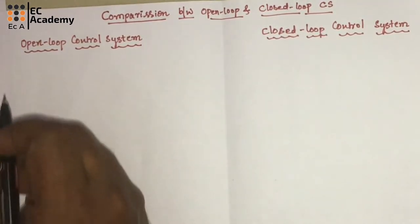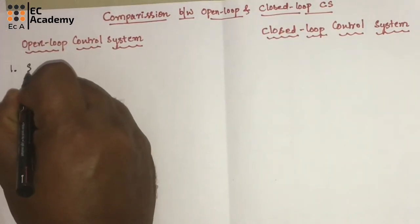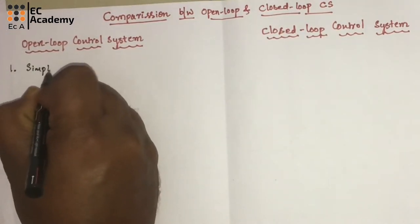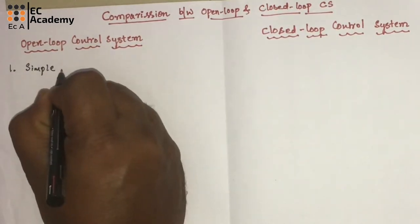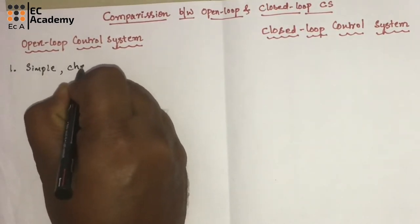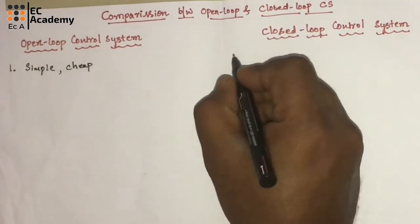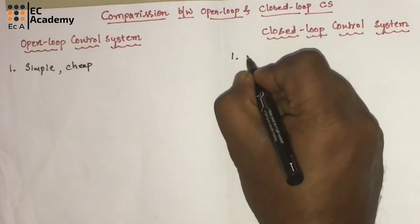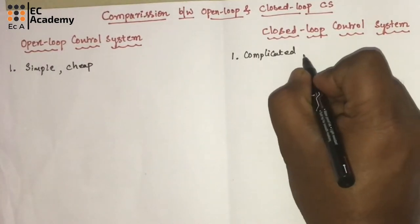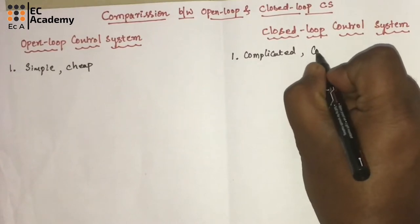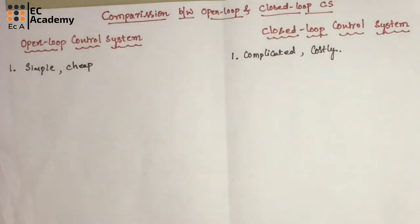The open loop control systems are always simple, and since they are simple, they are very cheap. In comparison, closed loop control systems are complicated, and since they are complicated, they are costly compared to open loop control systems.